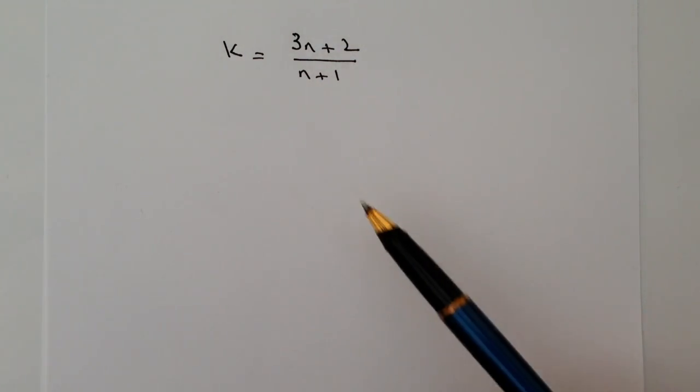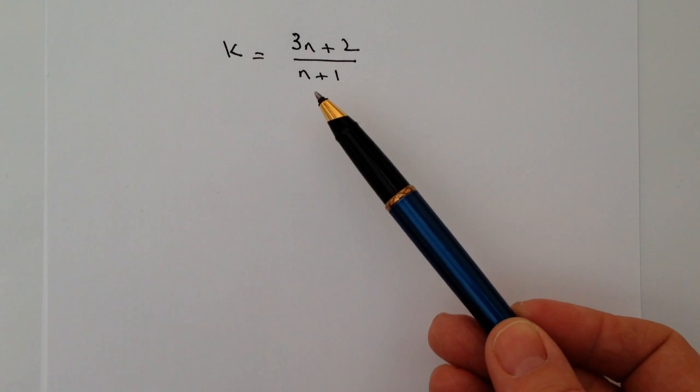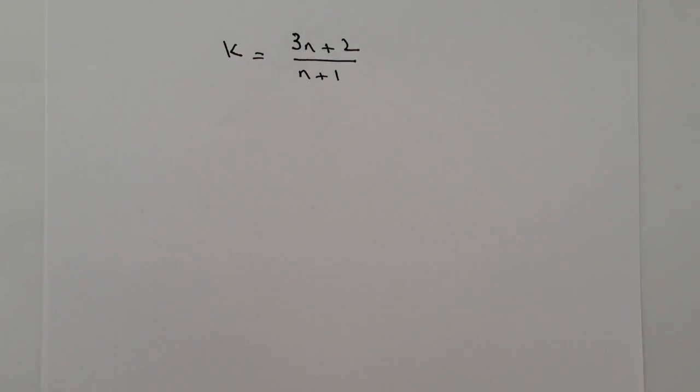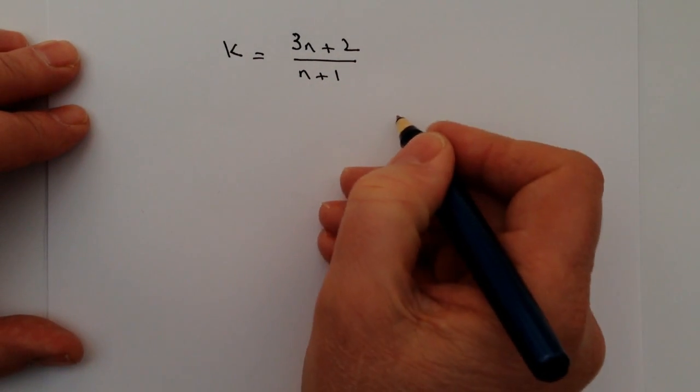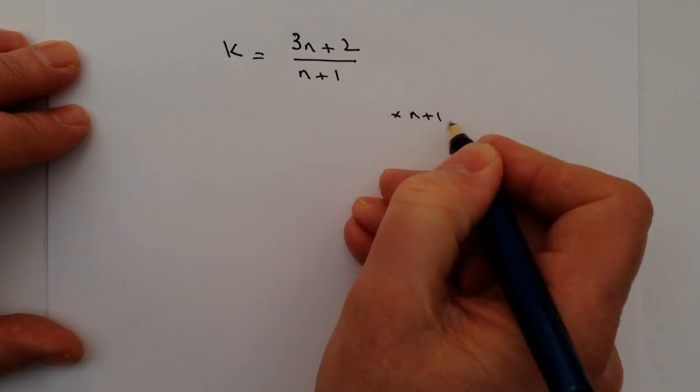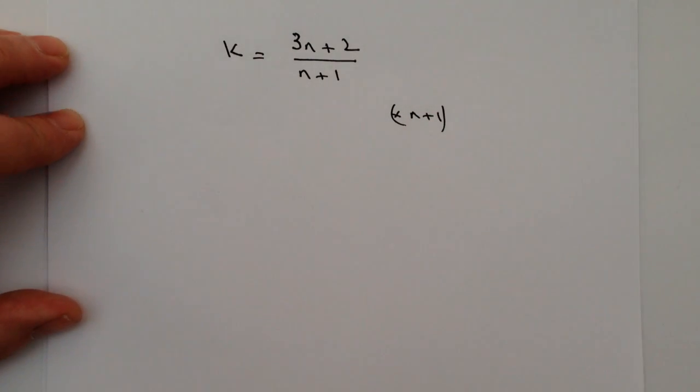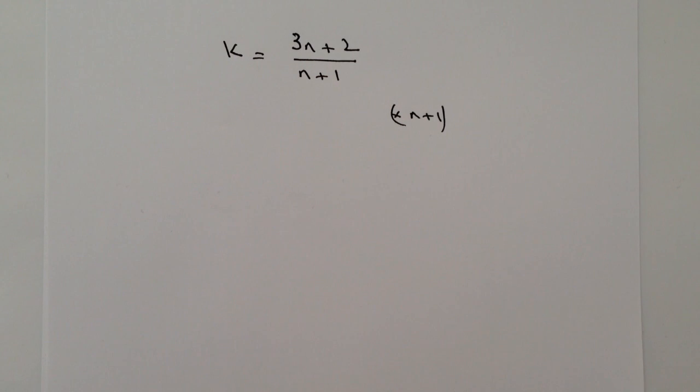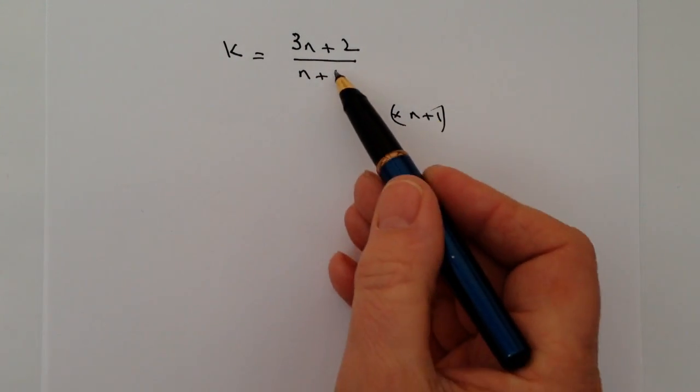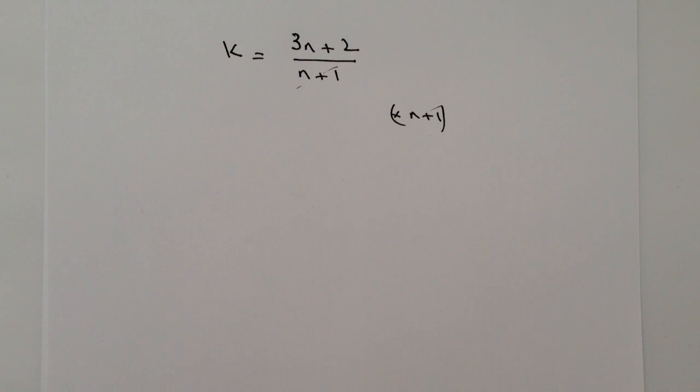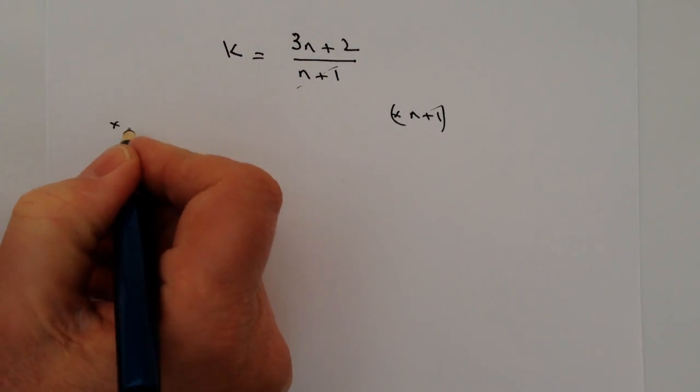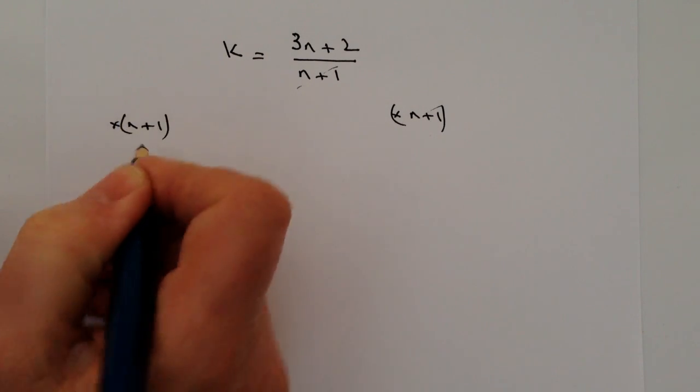So the problem I've got here is I've got this fraction of n plus 1 as the denominator. So if I multiply both sides by n plus 1, what happens is that on the right hand side it kind of cancels itself out. So you can appreciate that cancels themselves. On the left hand side, however, I still have this n plus 1 to deal with.